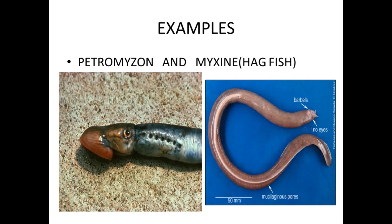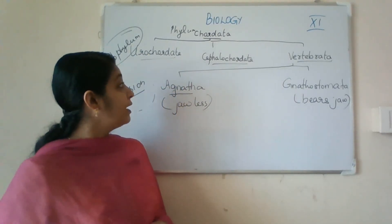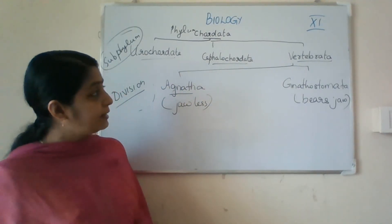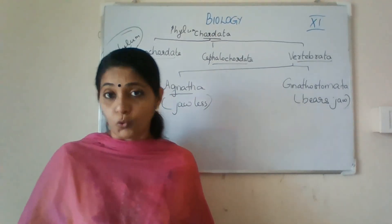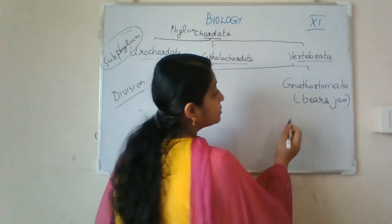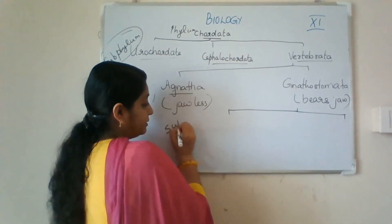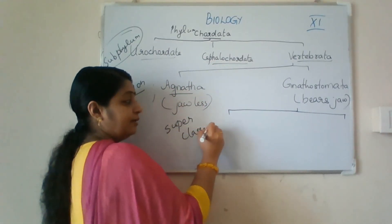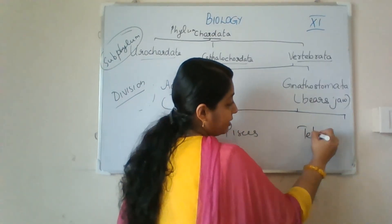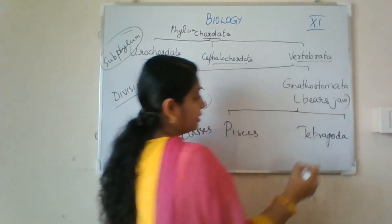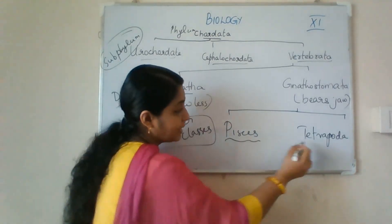These are the examples for Cyclostomata. Now we have seen division Agnatha, and we can go to the next division, Gnathostomata, which bears jaws. Gnathostomata is also classified into two superclasses: Pisces and Tetrapoda.